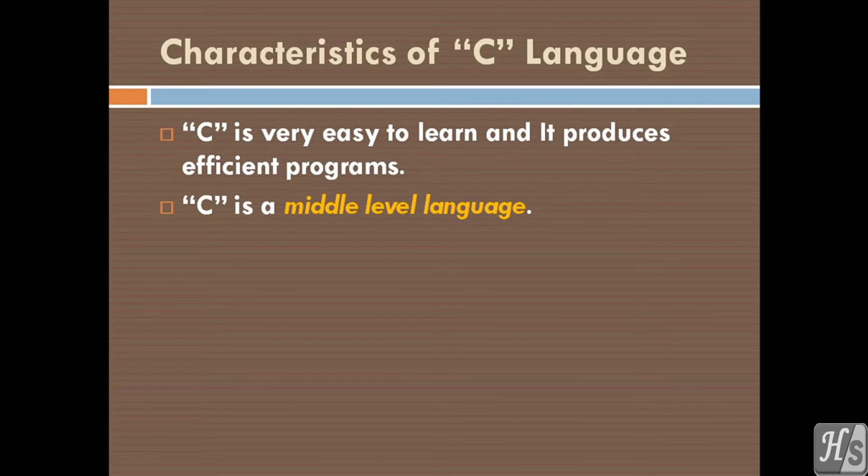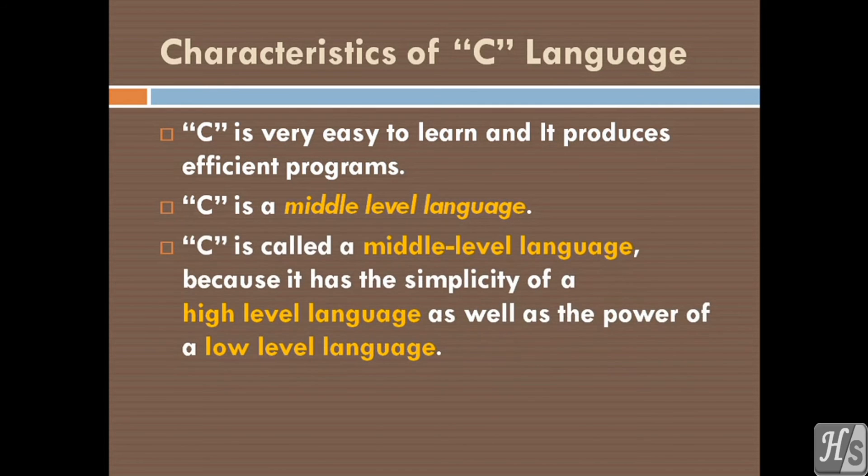C is a middle-level language. C is called a middle-level language because it has the simplicity of a high-level language as well as the power of a low-level language.